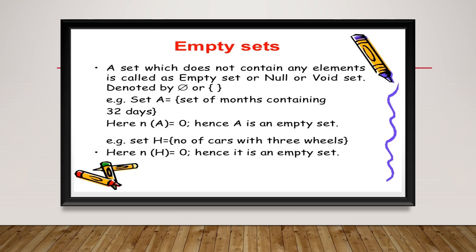Here, A is an empty set. A set of cars with three wheels — there are no cars with three wheels, so here you have an empty set.